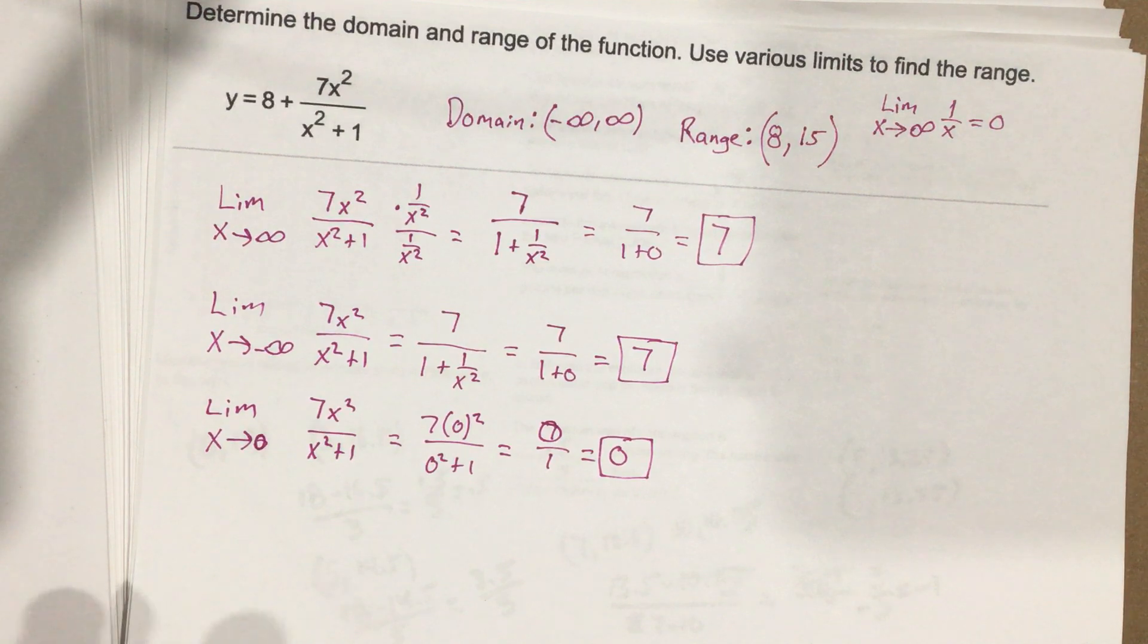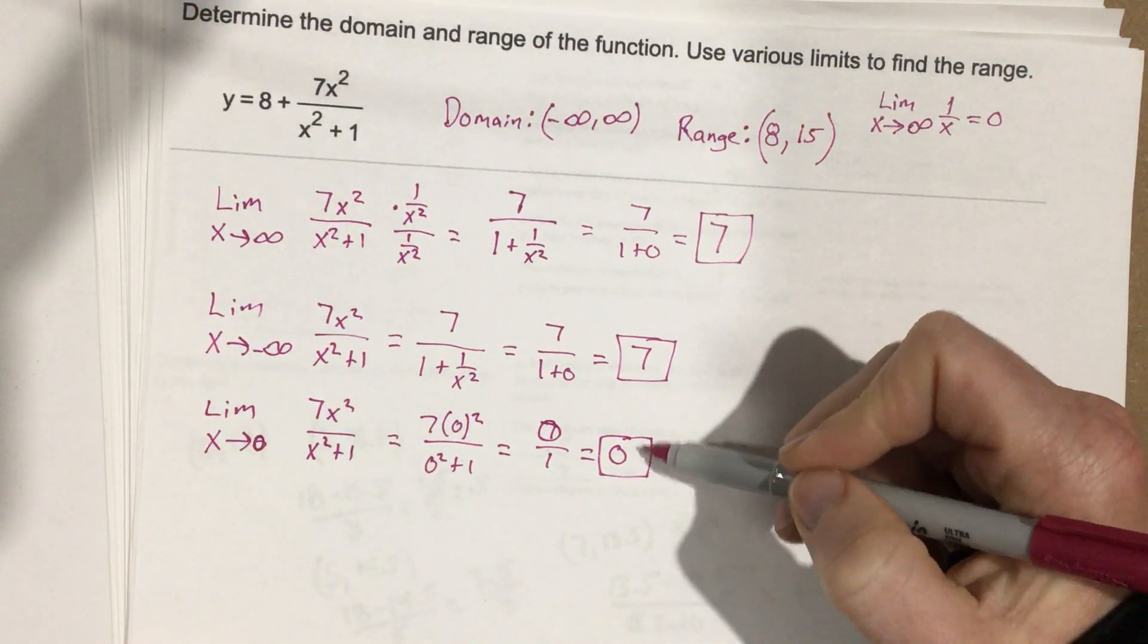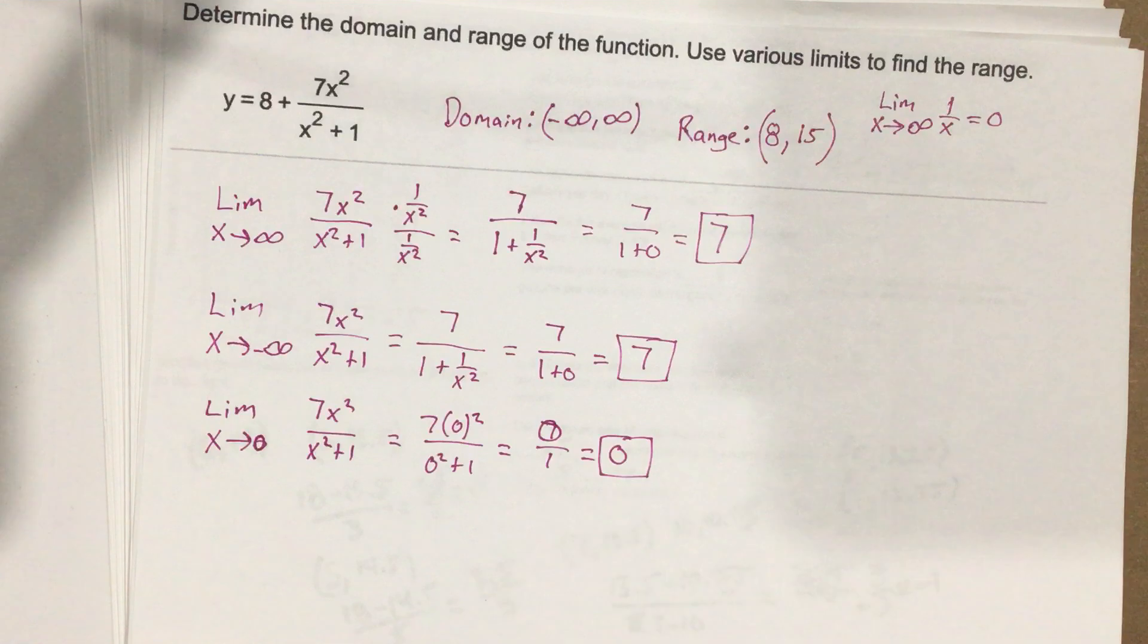So our range is going to go from 8 to 15, because our limits are going to straddle between 0 and 7. I hope that makes sense.